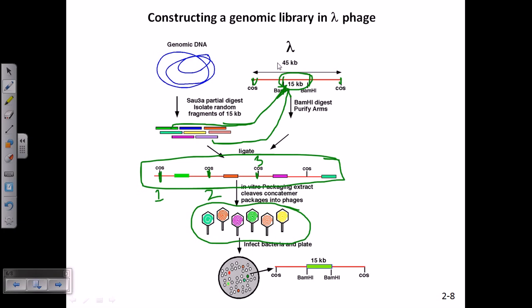Now what we get instead of this 15 kb genome segment of lambda phage, we get our desired gene of interest. So this is a way of constructing genomic libraries.